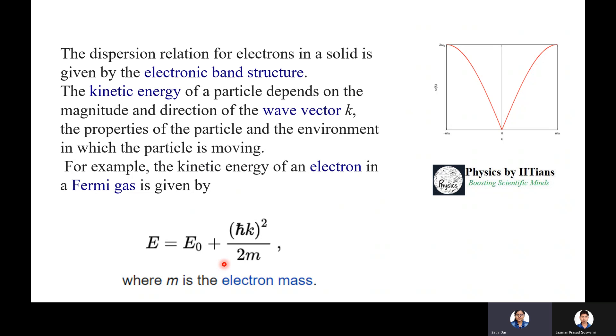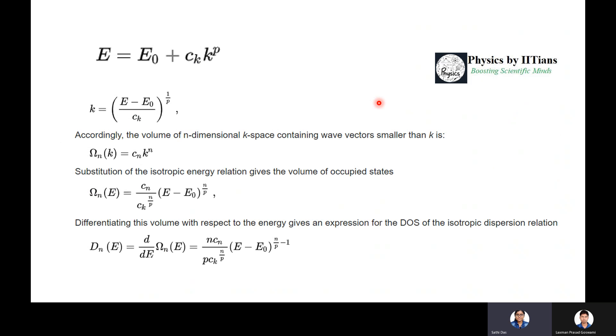Now I shall give you some examples of how to find the density of states for different energy variations. Suppose I am taking the parabolic variation of energy, taking the example of kinetic energy of an electron in the Fermi gas. So E can be written as E₀ + ℏ²k²/2m where m is the electron mass. This variation shows k vector varying from -π/a to +π/a.